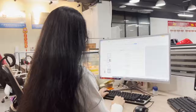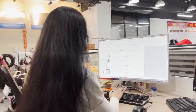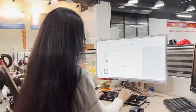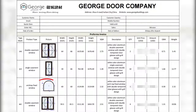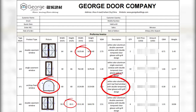Therefore, we make our quotations for customers which include window drawings, sizes, quantity, and a description about the windows to show what profile or glasses we use, CBMs, and weight — this will help the customers calculate the freight to their home.